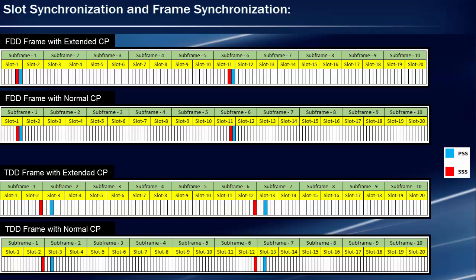Since cyclic prefix is unknown to UE at this stage, the precise positioning of SSS is not known to UE. For both FDD and TDD, there are two possible positions of SSS based on cyclic prefix type. UE blindly detects SSS by checking for it at these two possible positions. This way UE comes to know whether normal or extended cyclic prefix is configured in the cell.